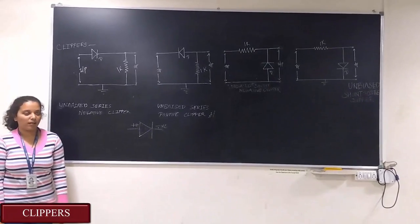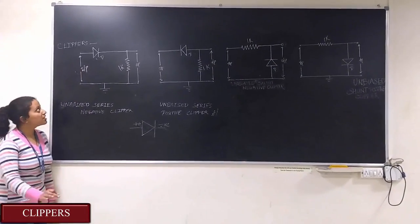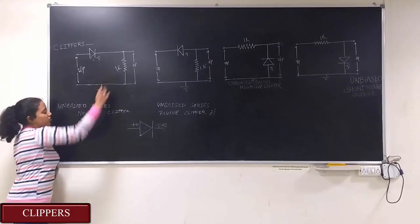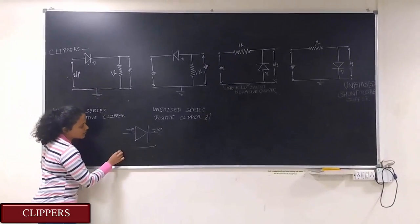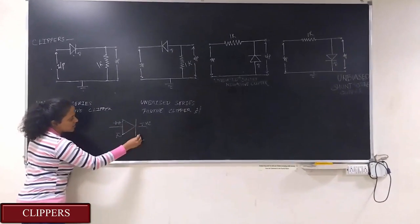Welcome to Analog Electronics One Lab. Our today's experiment is on Clippers. Clipper basically consists of a diode and a resistor. This is a symbolic representation of diode. This is P and this is N.